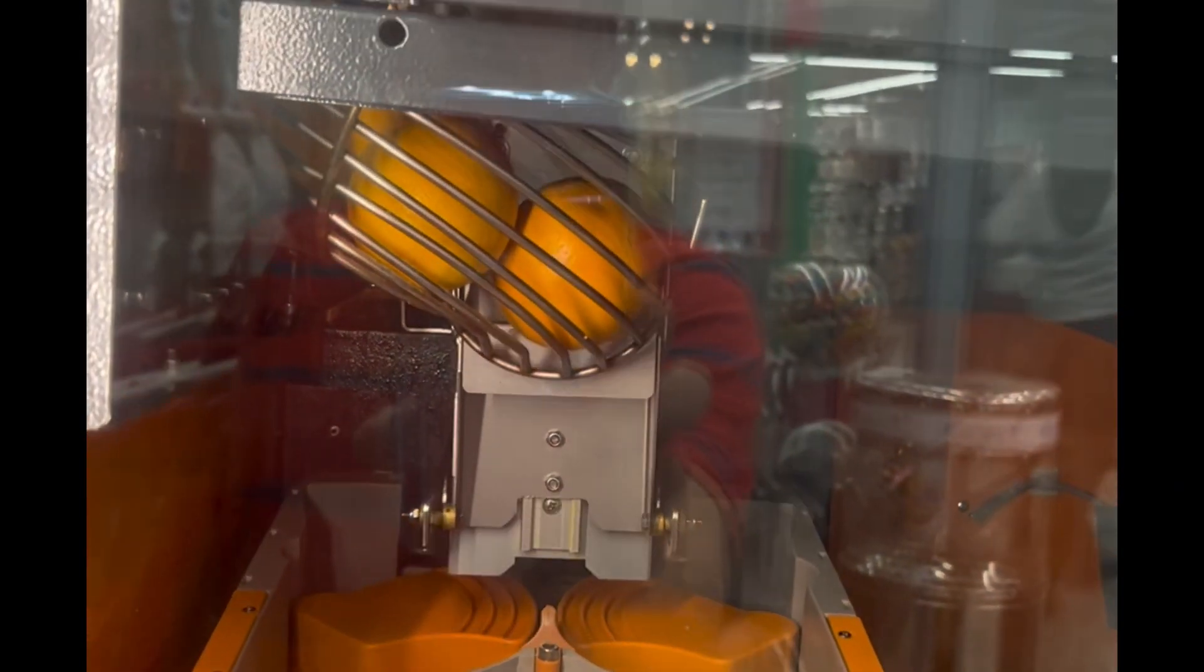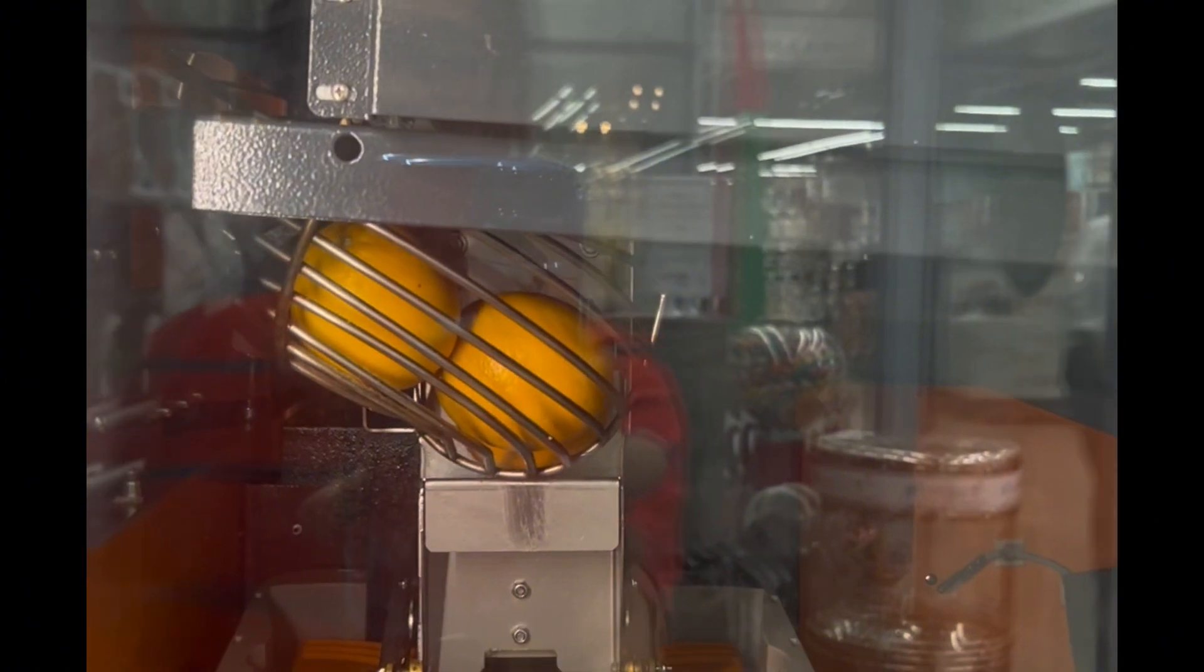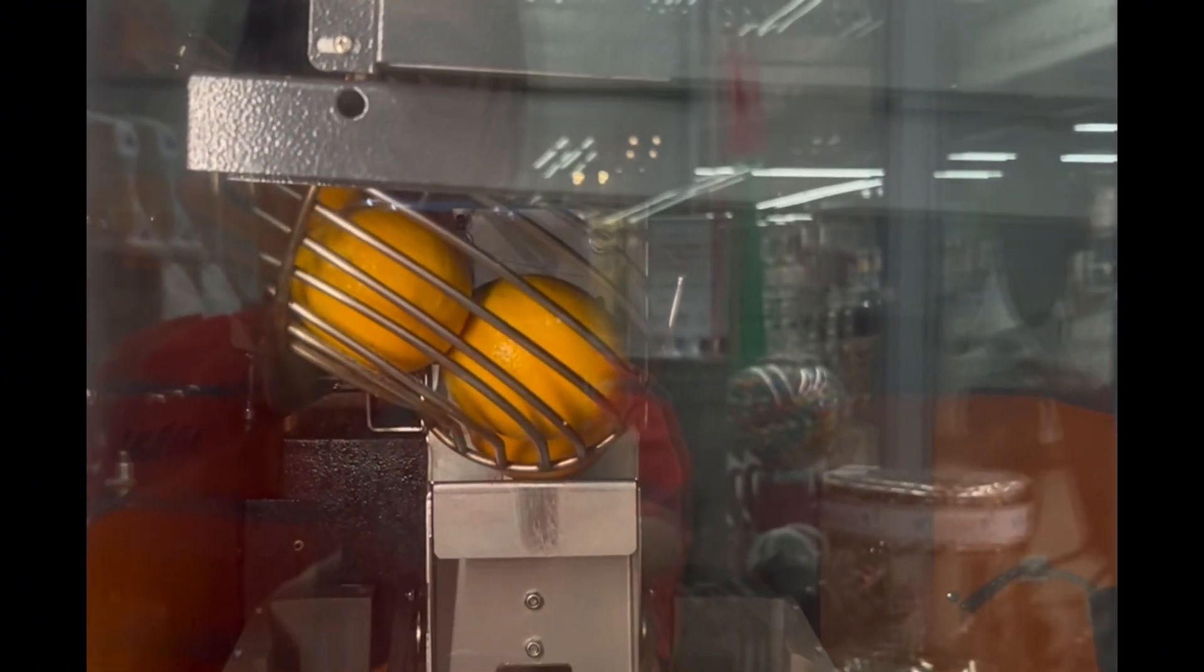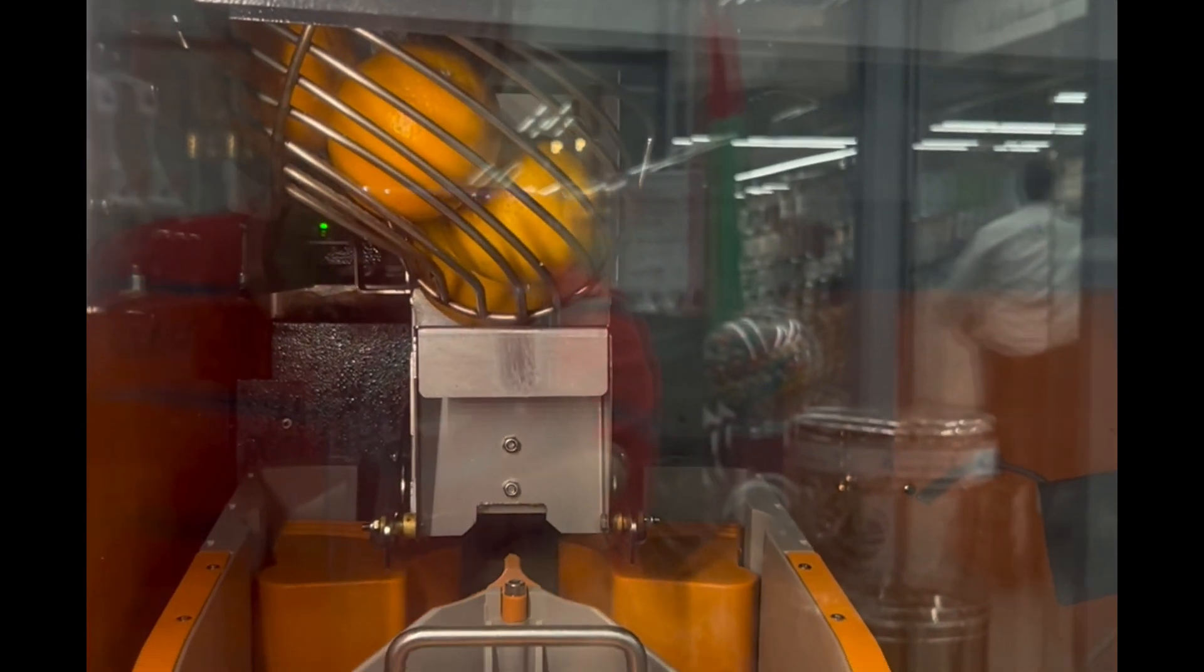After that, the machine dispenses a number of oranges from the storage, slices and squeezes the juice from the oranges into the cup.